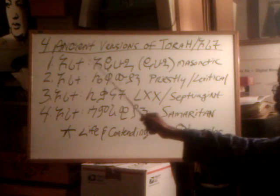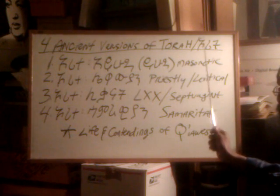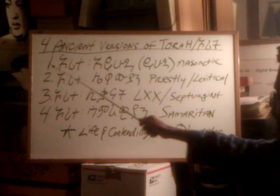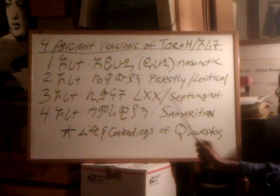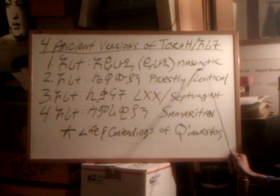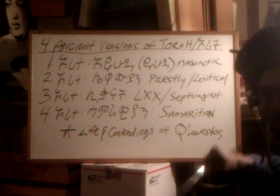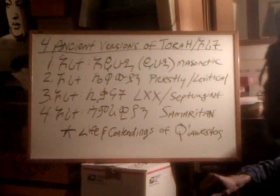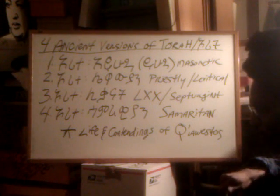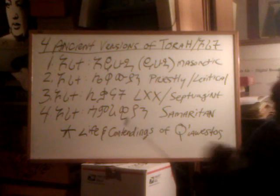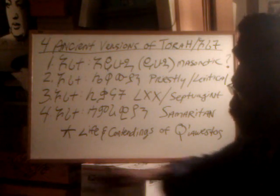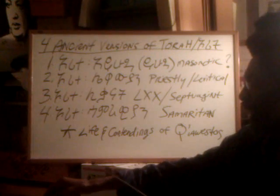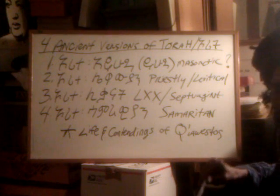The first thing that we need to understand is that there are four ancient versions of what's known as the Torah or the Orit. Firstly, we have what's called the Orit Eihud or the Orit Yehuda, which often is referred to as the Masoretic. We could put a question mark here because in our study it has brought up a question, and so far it is still under investigation.